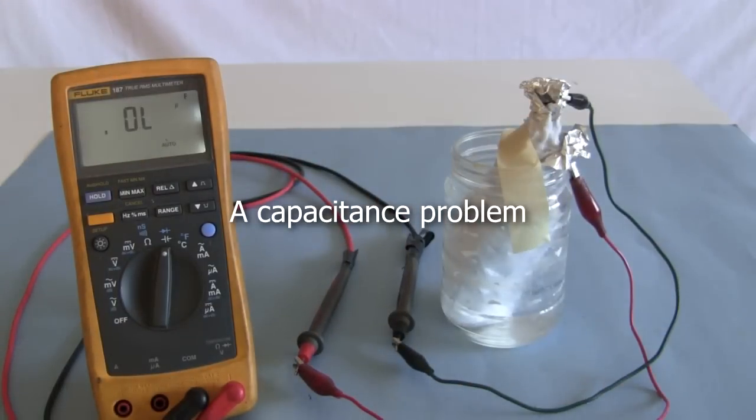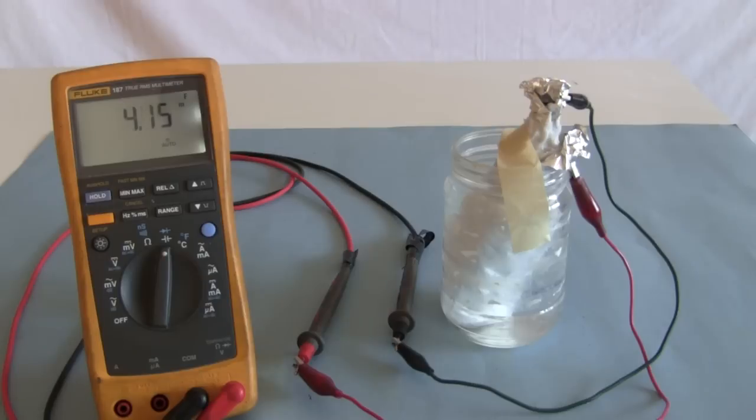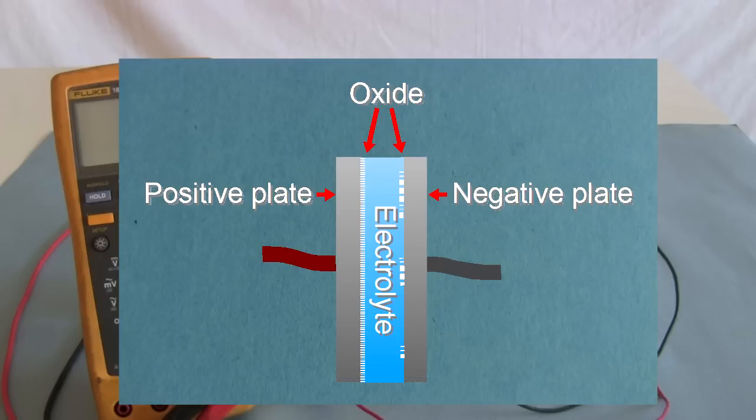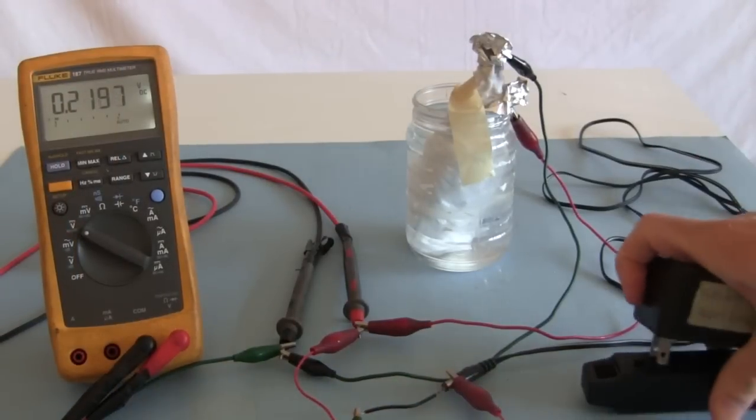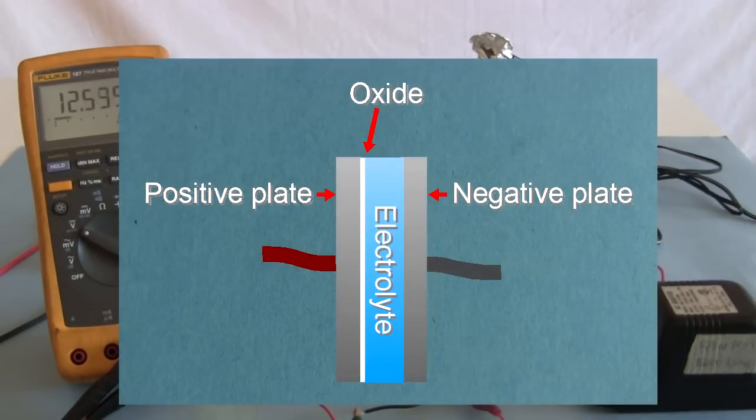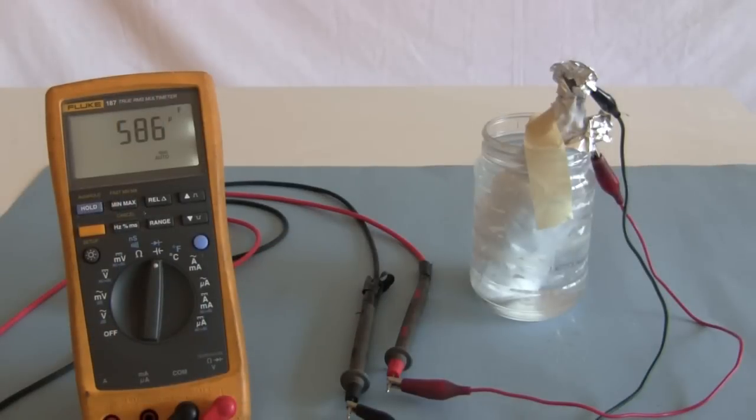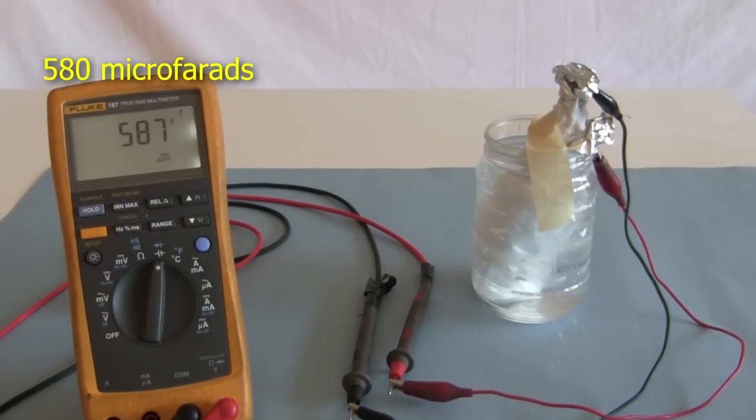If you let this capacitor sit for a few days and then measure the capacitance, you'll find it's super high, around 4 millifarads. It's not really though. The electrolyte heals the oxide layer, including putting a layer on the negative plate. But that layer is not supposed to be on the negative plate. Somehow, manufactured capacitors avoid that. So, when you connect the capacitor to a power supply again, it removes the oxide layer from the negative plate and you're back to the proper capacitance, around 580 microfarads.